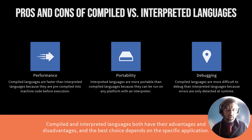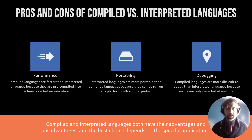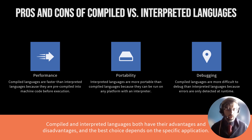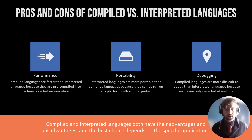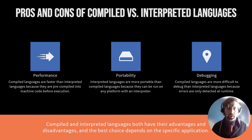However, interpreted languages can be viewed as much more portable. For example, if I needed to write a little program and I wanted it to run on a server on Amazon, I could just easily type out my Python code — I wouldn't need a built-in compiler to upload a DLL or a Java file to run it. I could just make my changes right there.